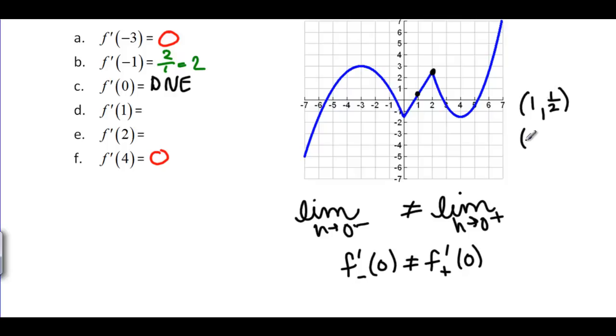And at 2 it looks like we are at the point 2, 2 and a half. That would make our change in y 2 and our change in x 1. So we get 2 over 1, which is 2.